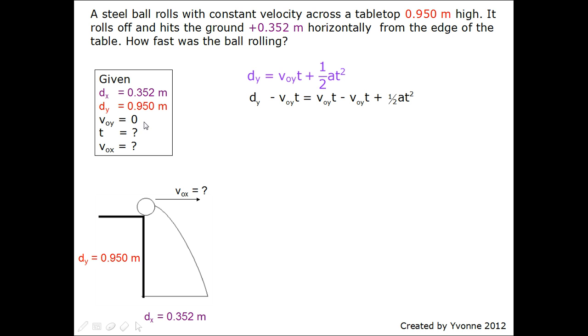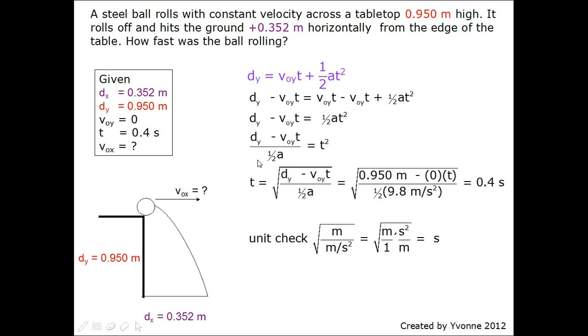Each clue is highlighted in different colors to show us the specific information. So we isolated the variable, which gets the equation like this. And we substituted the values in, which is 0.950 meter minus 0 over ½ times 9.8 meters per second squared, which we get the answer is 0.4 second. The unit check is showing below.